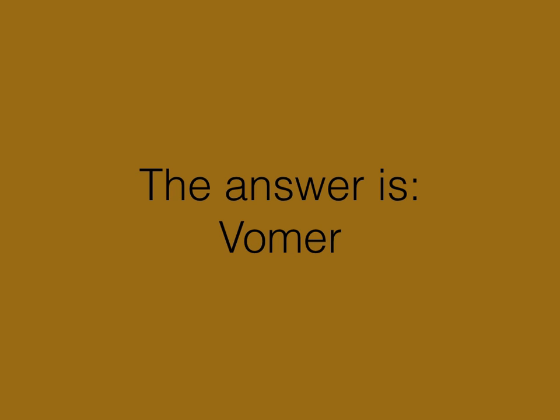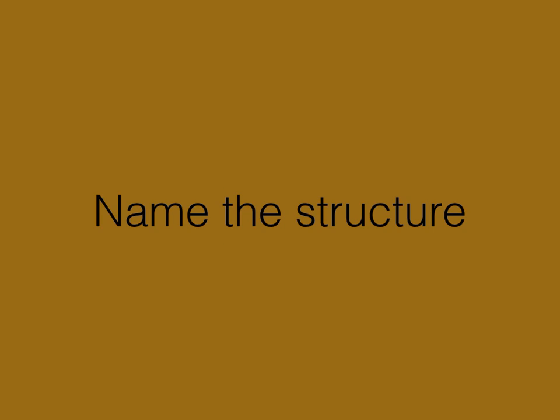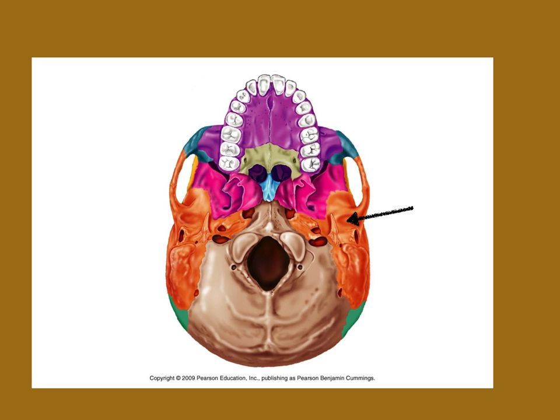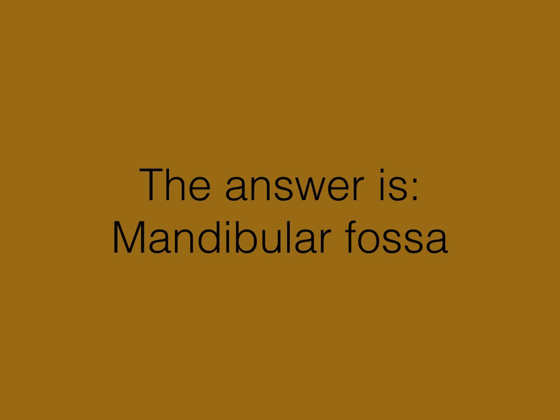Name of the bone. That is the vomer. This time we'll be looking at some landmarks on bones. What is that little depression there right in front of your ear canal called? That is the mandibular fossa. That's what your mandible makes a joint with.